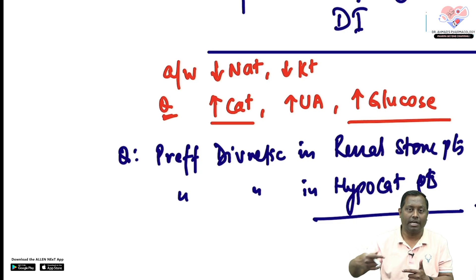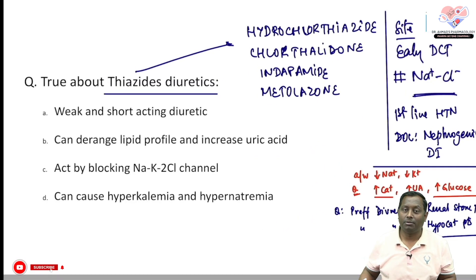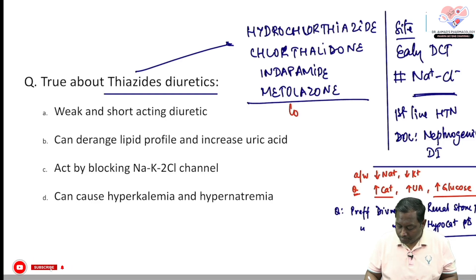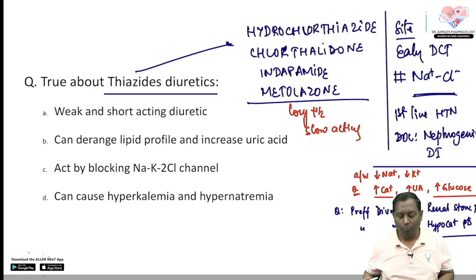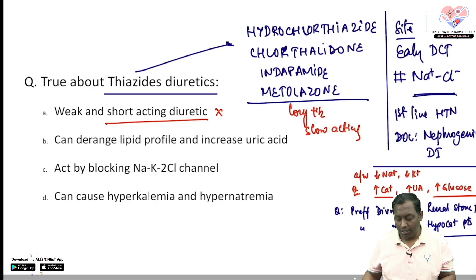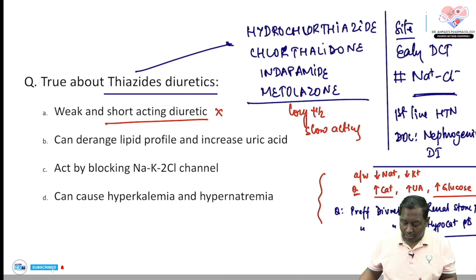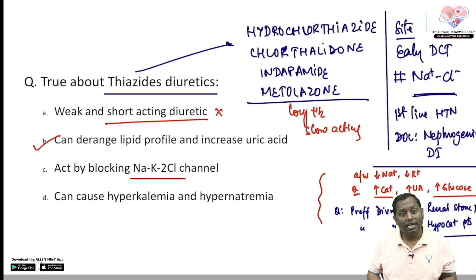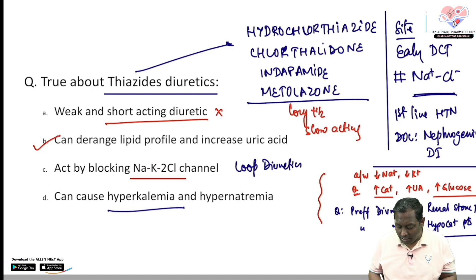Thiazide diuretics are first-line in hypertension. They are long-acting with a long half-life, but slow-acting — not immediately fast-acting like loop diuretics. They are weak diuretics compared to loop diuretics, but longer acting. They can also derange lipid profile and uric acid. Note: NAK2Cl blockade is the mechanism of loop diuretics like furosemide, not thiazides.